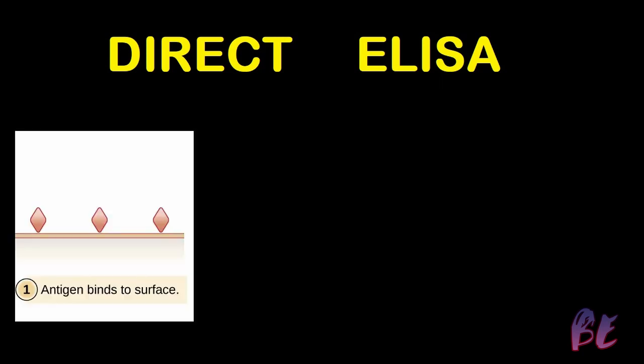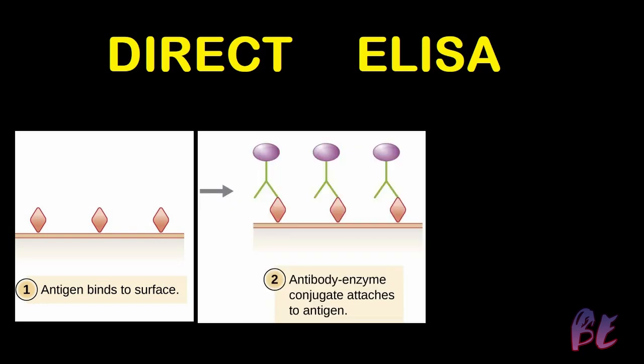In the case of direct ELISA, antigen binds to the surface of the microwell plate. This antigen is previously already bound to the surface of the microwell plate, which we use to detect the antibody. Then the antibody-enzyme conjugate is added to the microwell plate, and it attaches with the antigen.